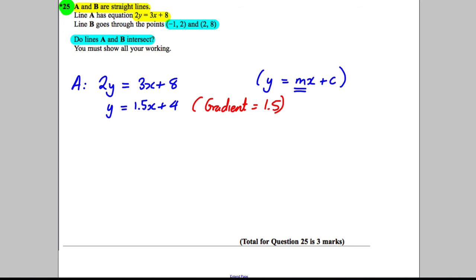Now, we've got line B going through these two points, so we can work out the gradient. The gradient of line B is the difference in y's divided by the difference in x's. So we've got negative 1, 2, and we've got 2 and 8.